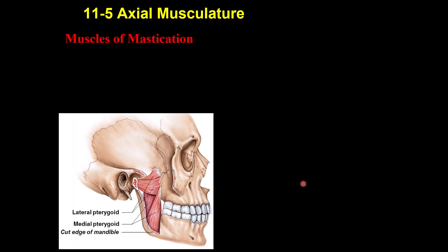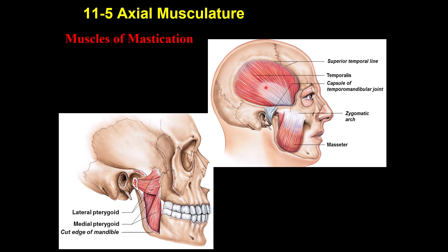These are the muscles of mastication. Three of these muscles cause closure of the jaw: the temporalis, the masseter, and the medial pterygoid. These three muscles close the jaw. One muscle opens the jaw — that is the lateral pterygoid.